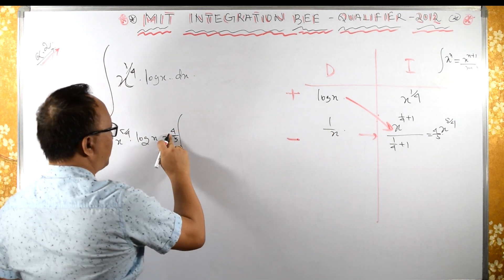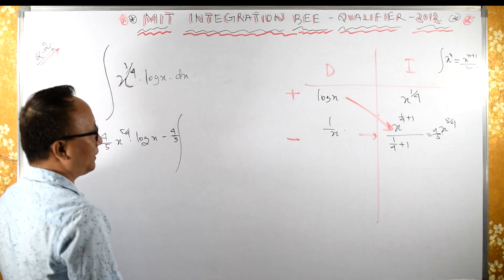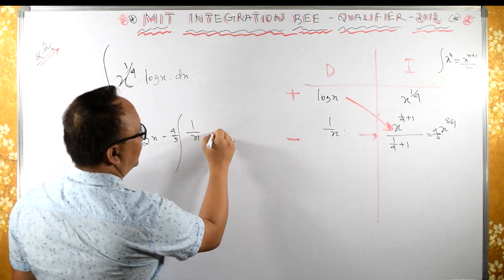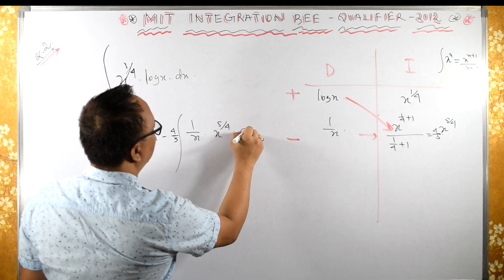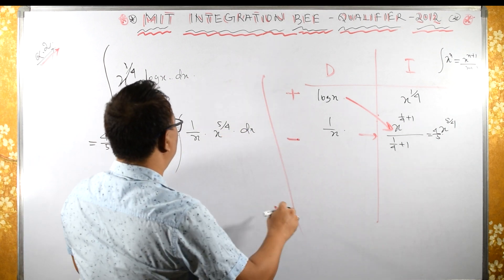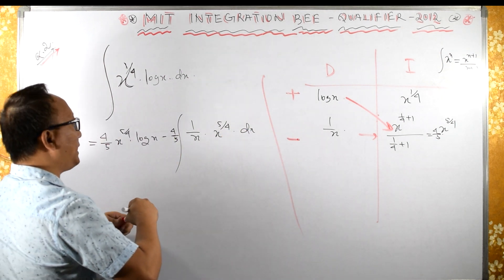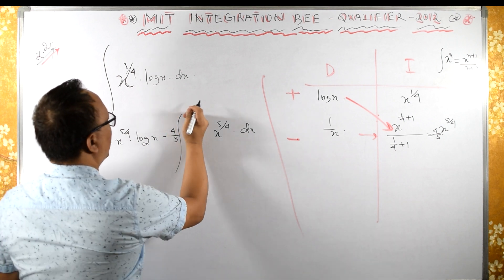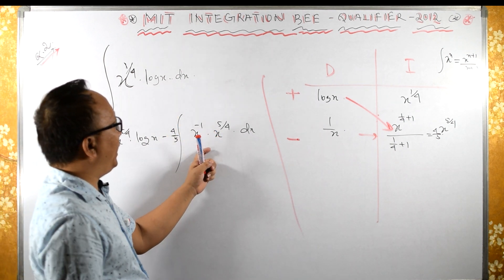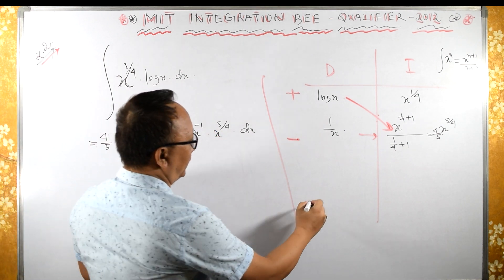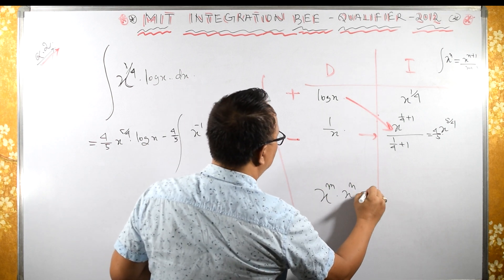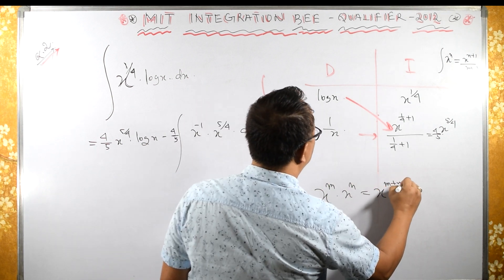So we have minus 4/5 times the integral of 1/x times x raised to 5/4 dx. Now 1/x is the same as x raised to minus 1. We apply the property that x raised to m times x raised to n equals x raised to m plus n.